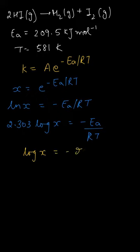Ea is 209.5 times 10 to the power 3 because the value is in kilojoules, so we convert to joules by multiplying by 10 to the power 3.